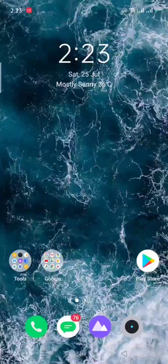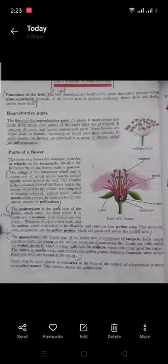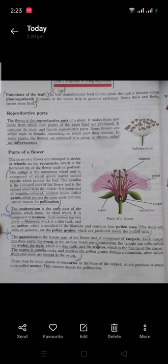Assalamu alaikum students, welcome to my channel. Lecture number three, Amazing Science Book, Grade 7, page number four: Reproductive Parts of a Plant. Yesterday we learned about the vegetative parts of the plant. Now we are going to learn the reproductive parts of plant. The flower is the reproductive part of a plant. It makes fruits and seeds from which new plants of the same kind are produced.